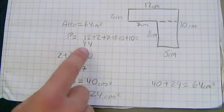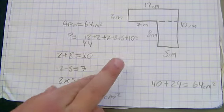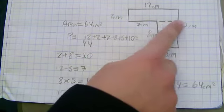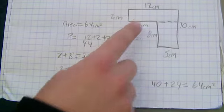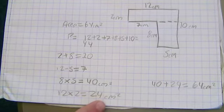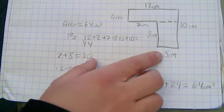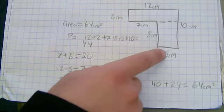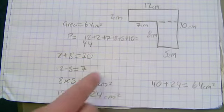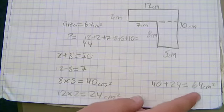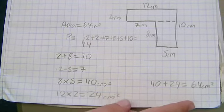And then to find the area, you do—so I split them by there, so 2 times 12, that's 24 centimeters squared. And then 5 times 8 was 40 centimeters squared, and add them together, 64 centimeters squared.